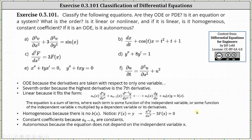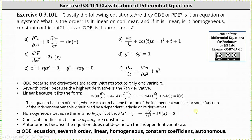In conclusion for part C: we have an ODE, we have an equation not a system, the equation has seventh order, it's linear, it's homogeneous, it has constant coefficients, and it's autonomous.